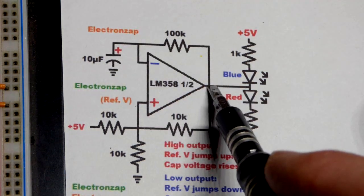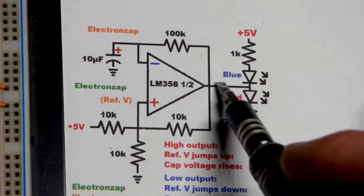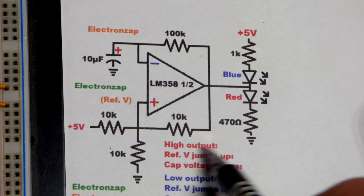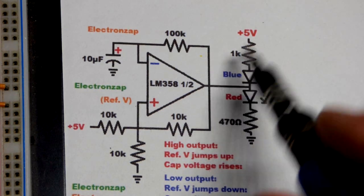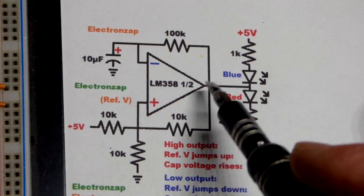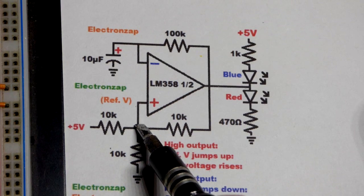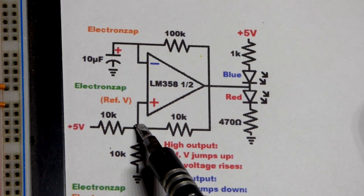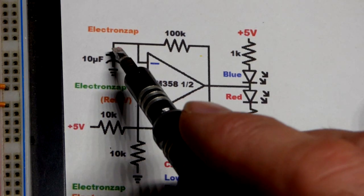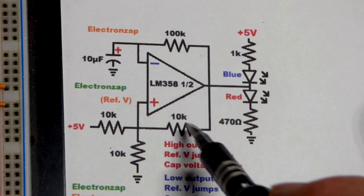Once the capacitor gets high enough, then the output goes low. That's when the blue LED lights up. The output basically connects to ground. It does a pretty good job at that. That's why it's a single supply op-amp. This voltage also dips as I said before, and the capacitor starts discharging.